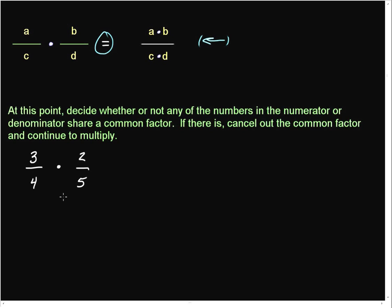So, we have, in this case, 3/4 times 2/5. And all we have to do is have numbers in the top and the bottom, not side to side - top and bottom that share a common factor.